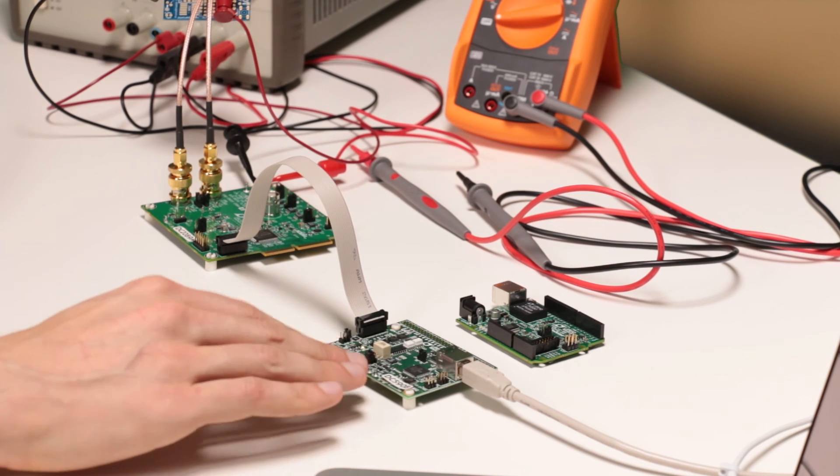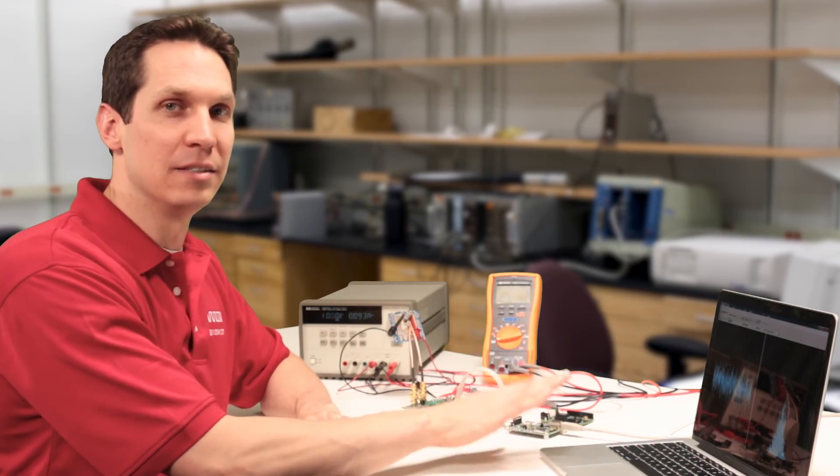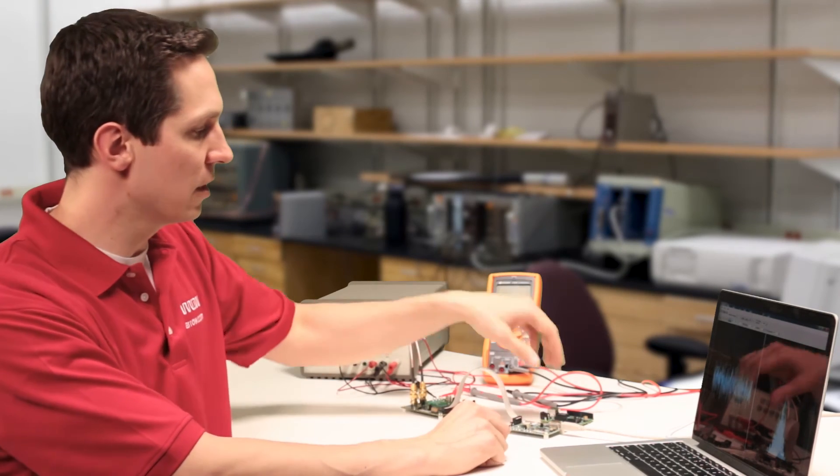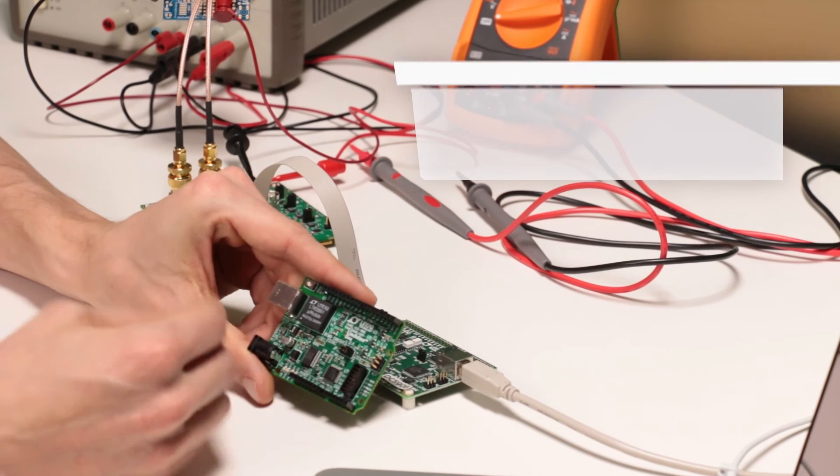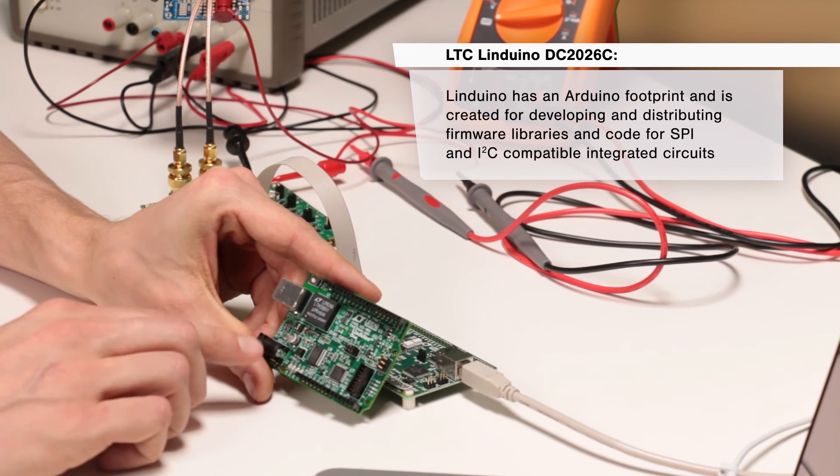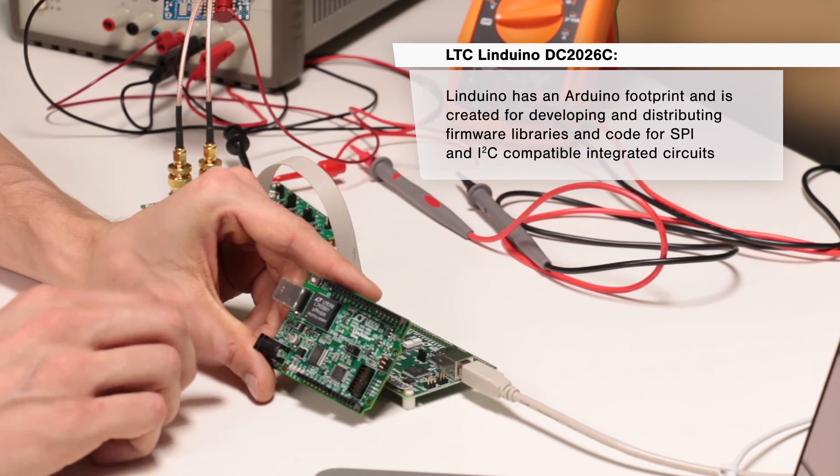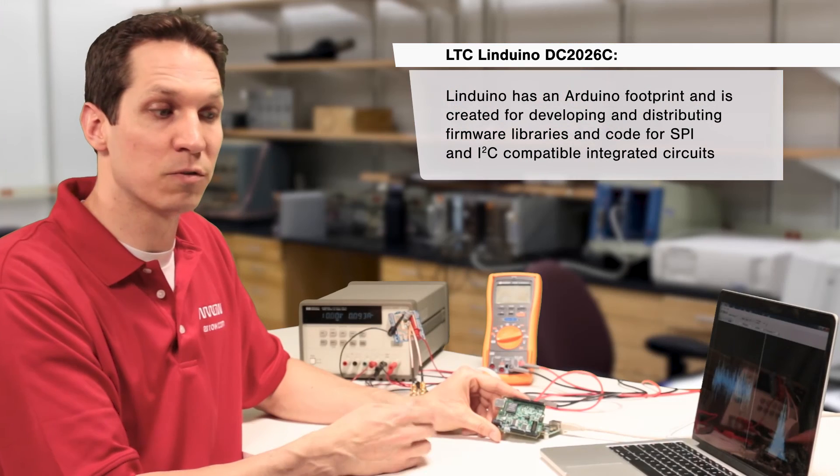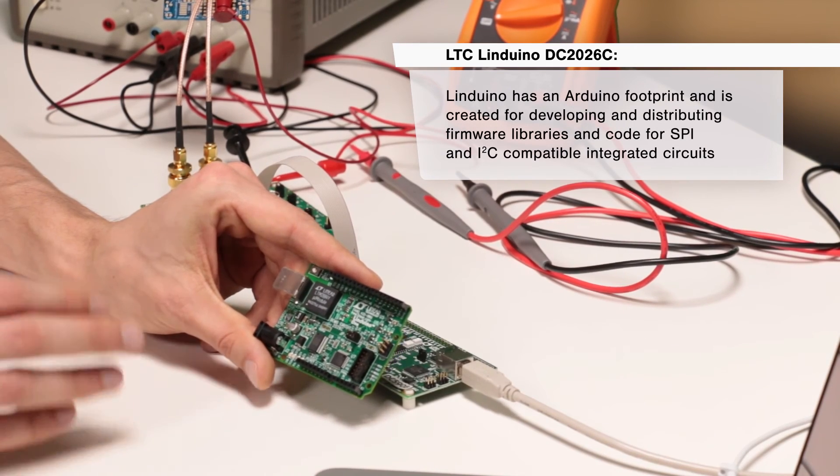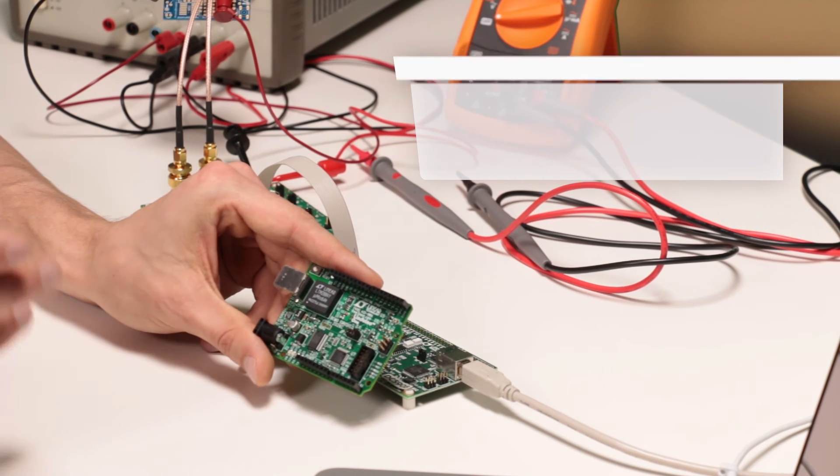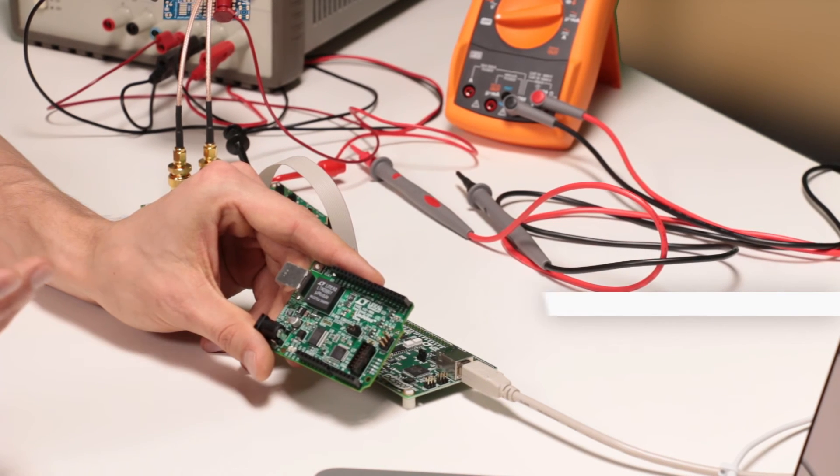So currently we're using the DC 590 for communication between the ADC and the computer itself. However, LTC also has the Linduino, which we could use instead. The Linduino has an Arduino footprint and it was created for developing and distributing firmware libraries and code for SPI and I squared C compatible integrated circuits. The DC 2026 board can also be utilized to evaluate provided C++ code libraries, thus saving design time.